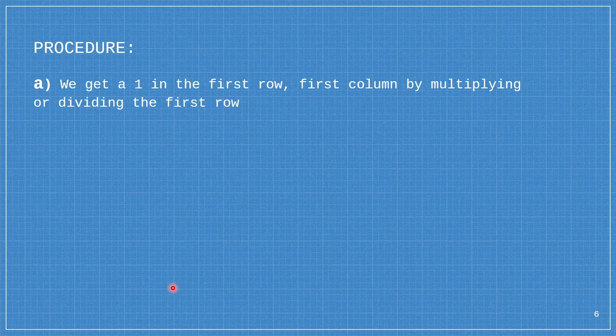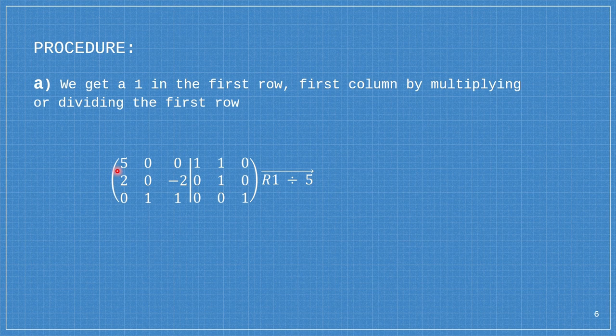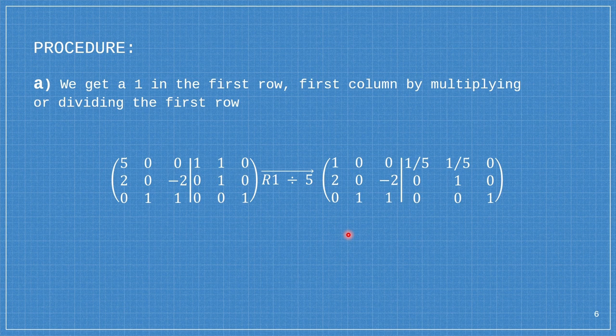After that, we're going to get 1 in the first row, first column, by dividing the first row. In order for this to be 1, I have to divide the whole row 1 by 5, and that would give us 1, 0, 0, 1 over 5, 1 over 5, and then 0.